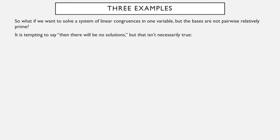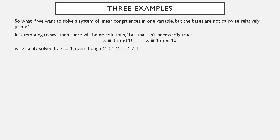It's tempting to just say, well, then no solutions, but that's not necessarily true. Can you find an x equivalent to 1 mod 10 and also equivalent to 1 mod 12? The bases, 10 and 12, are definitely not relatively prime, but 1 is definitely an integer that solves both. So there might be solutions even if the bases aren't relatively prime.